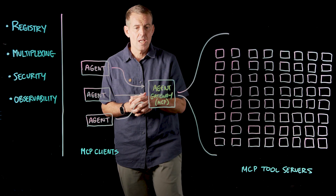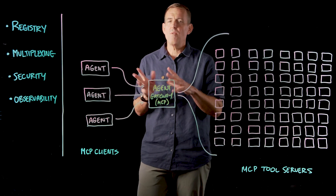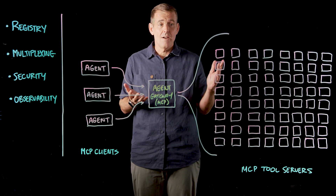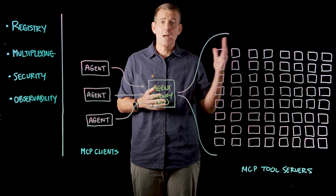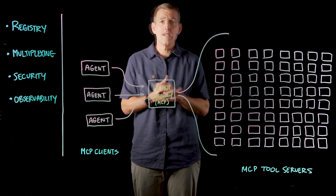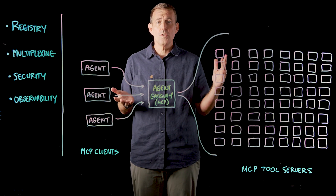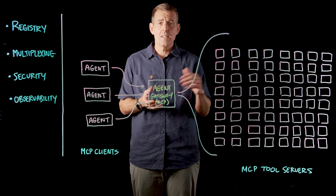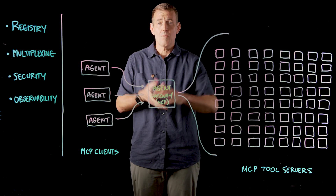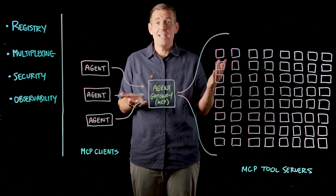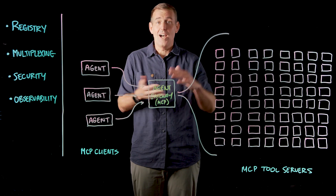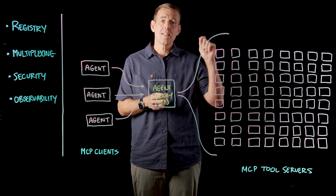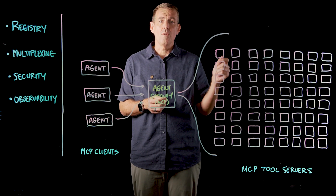The first use case is around registry. Why is registry important? The success of MCP as a protocol — if you look in public registries, you'll see tens of thousands of tool servers. You can search those tool servers for what tools exist there. If each tool server had 10 tools in it, that's hundreds of thousands of tools.